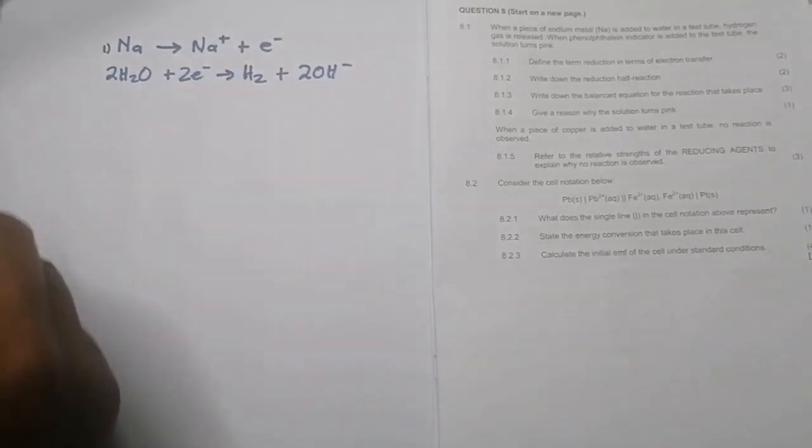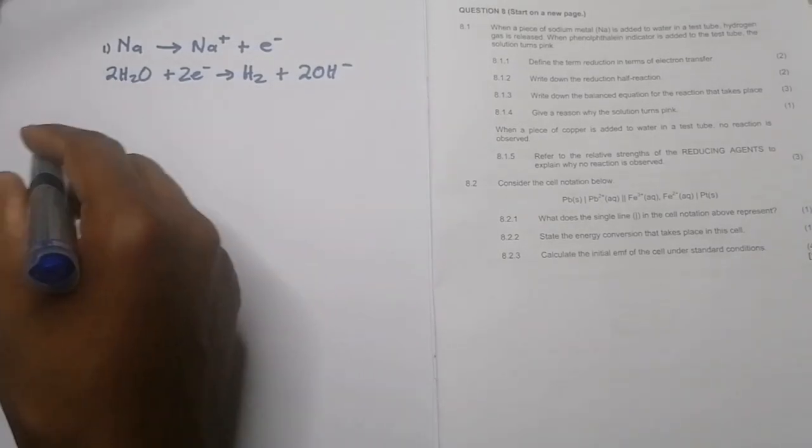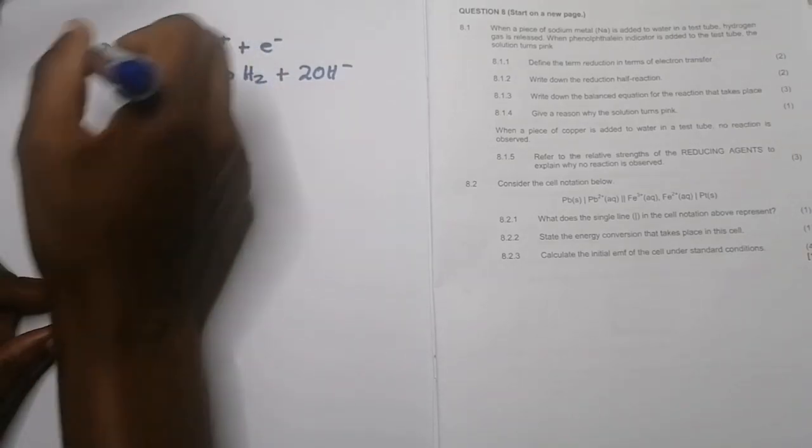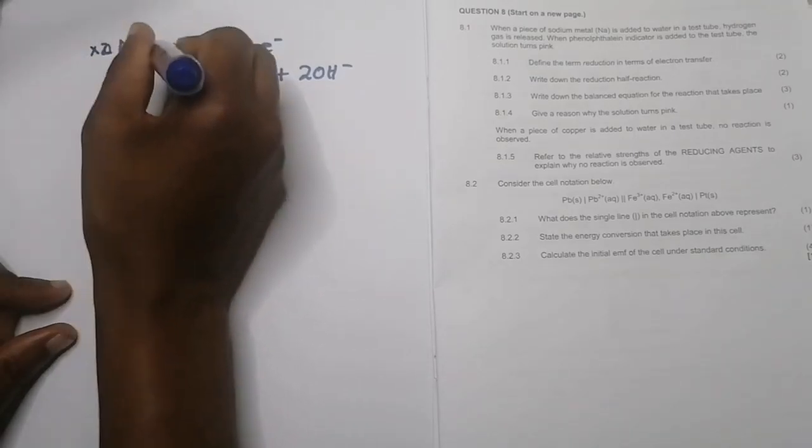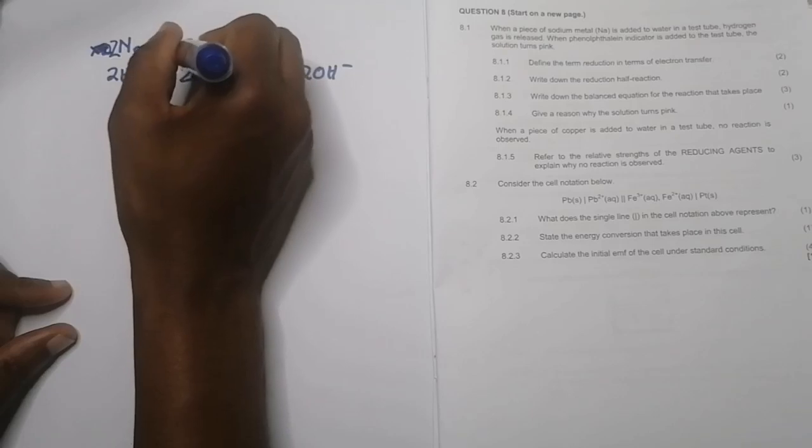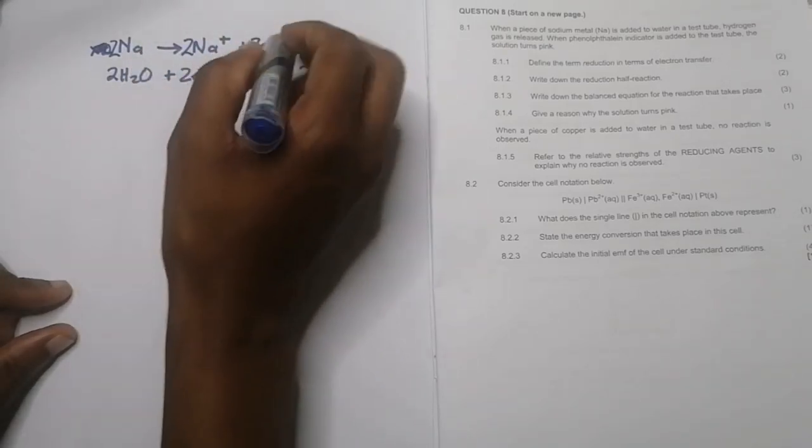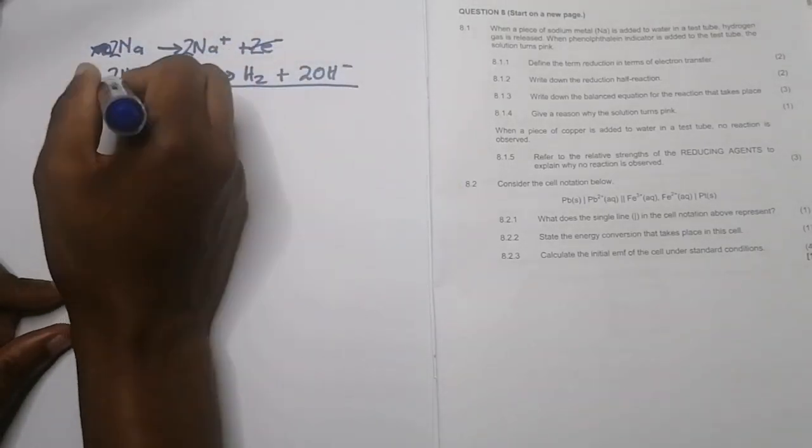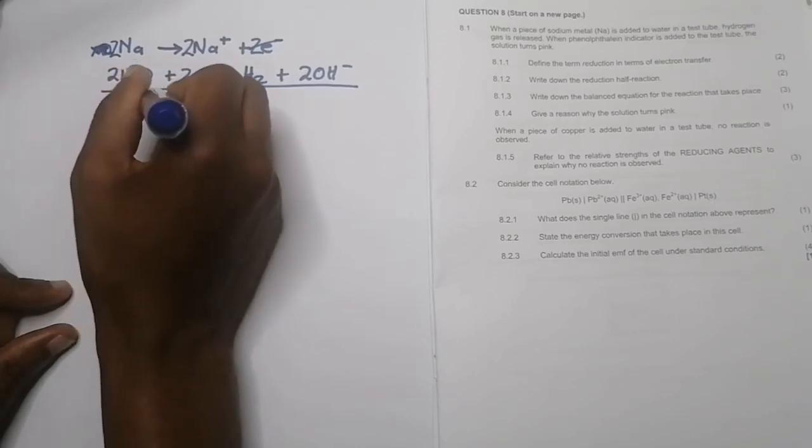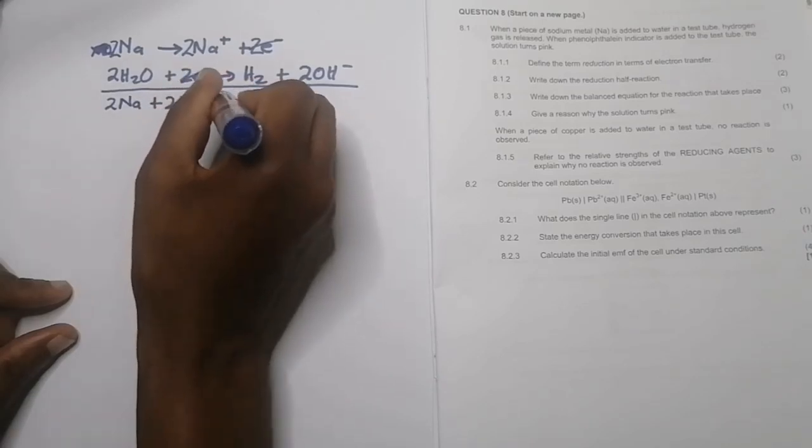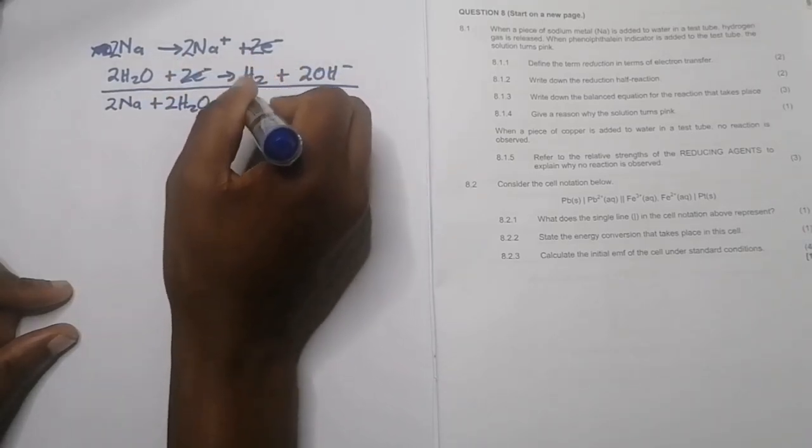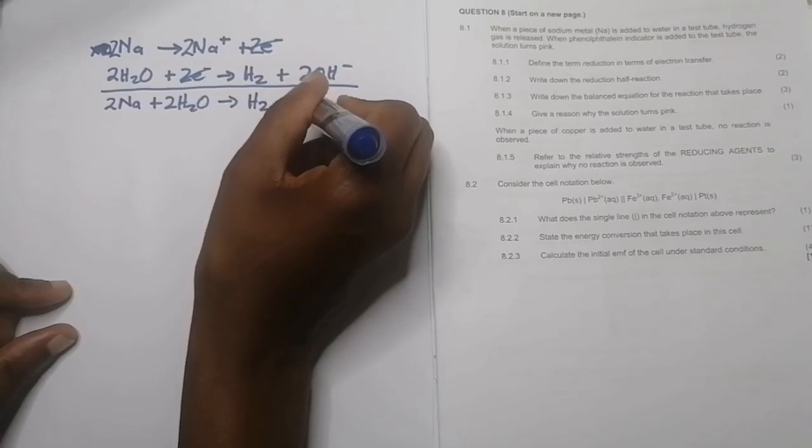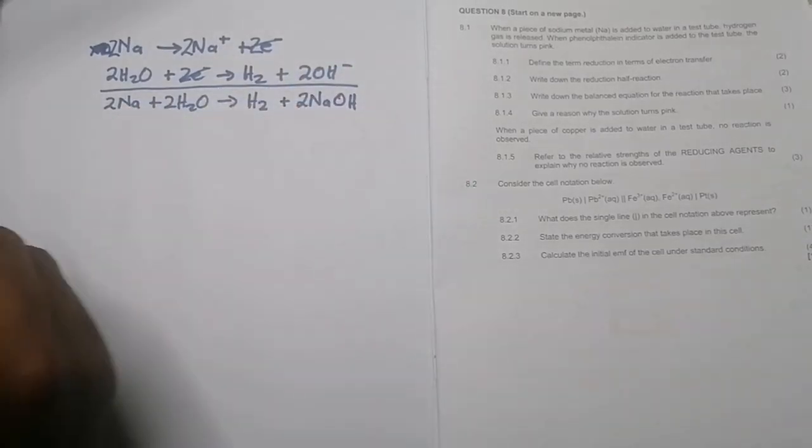So this would be the oxidation reaction. This would be the reduction reaction. In this case, we had 2H2O plus two electrons, and what it gives us is H2 plus 2OH minus. So I'm going to have to multiply the top one by two. So this becomes 2Na goes to 2Na+ plus two electrons. And the reason for that, I want to make sure that my electrons are balanced. So ultimately, I can cancel the number of electrons there. So I will have 2Na plus 2H2O and that will give us H2 plus 2 times sodium hydroxide. So this is our net cell reaction.